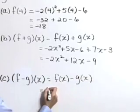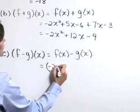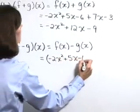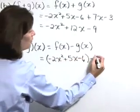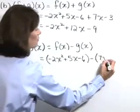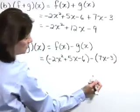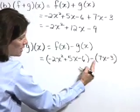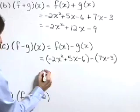f of x is negative 2x squared plus 5x minus 6. From that, we'll subtract g of x, which is 7x minus 3. Be sure to open a set of parentheses here and remember to distribute that minus sign to each term.